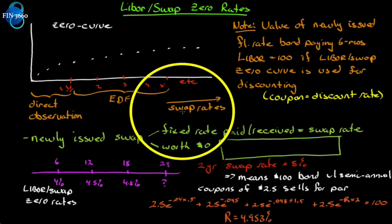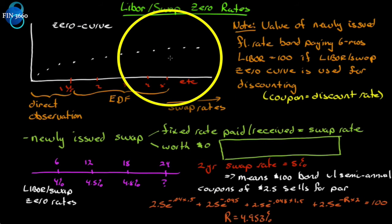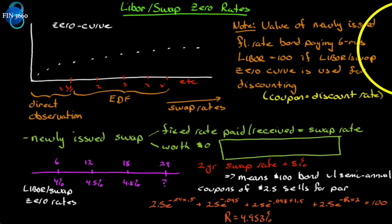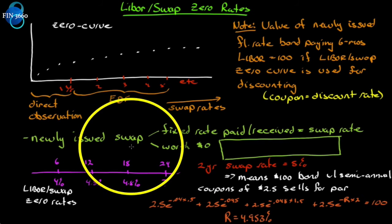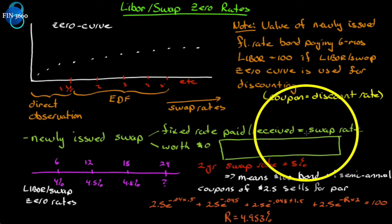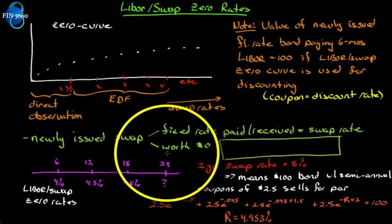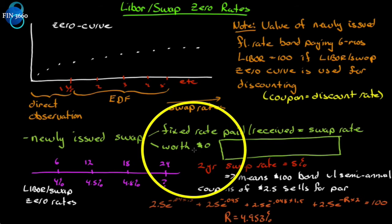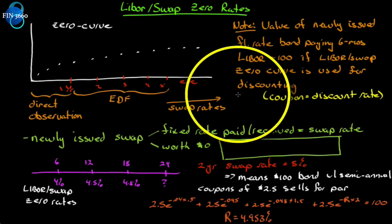We're going to get an example of how we use the swap rates to extend the zero curve. But there's a bigger lesson being smuggled into this conversation. For a newly issued swap, we have a few things we can say. Number one, the fixed rate equals the swap rate. Number two, on the day that the swap is created, it is worth zero.